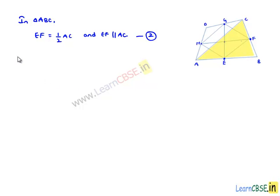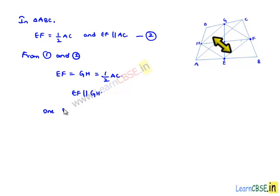So, from equation 1 and 2, we can say that EF will be equal to GH which is equal to half AC, and also as EF is parallel to AC and GH is parallel to AC, we can say that EF is parallel to GH. So, in this quadrilateral EFGH, we got that one of the sides pair is equal and parallel.